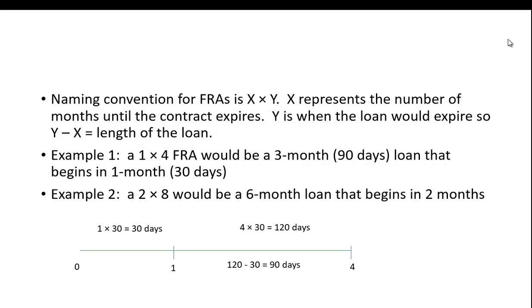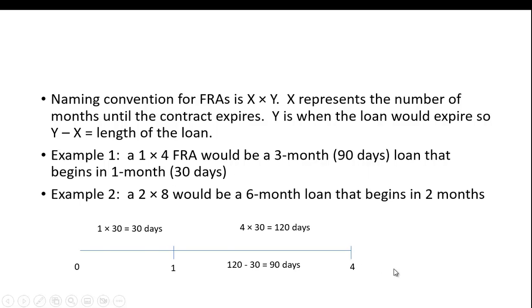The best way to sort this out is to draw a timeline. For the 1 by 4, we place 1 and 4 on the timeline: one month in the future is where the contract begins, and four months in the future is where it ends. The loan takes place between those points — 120 days minus the fact that it doesn't start until one month in the future gives us a 90-day loan starting one month in the future.